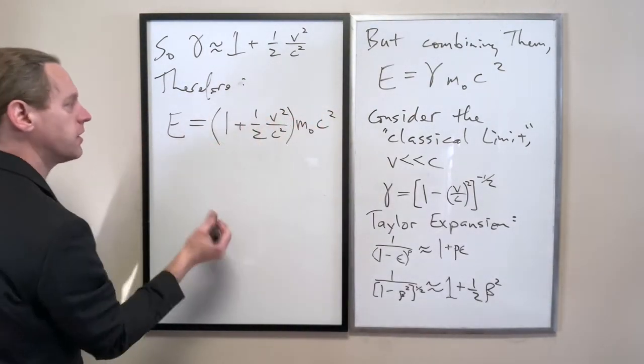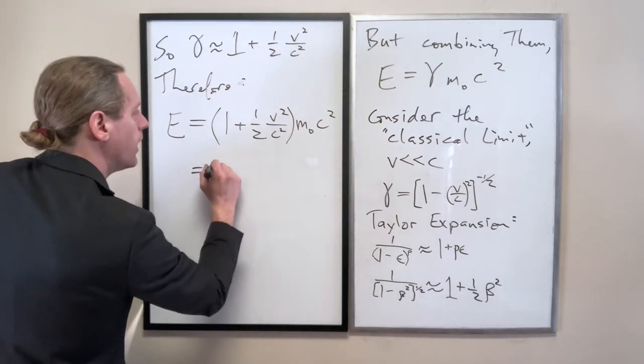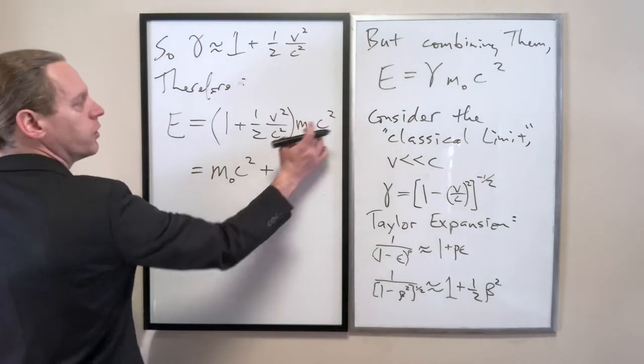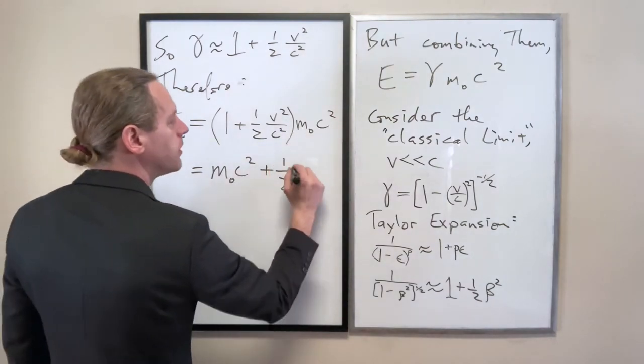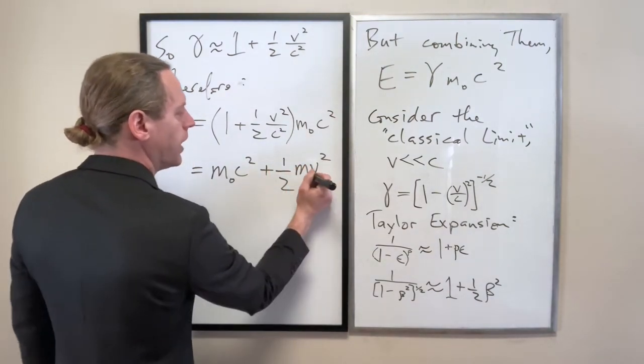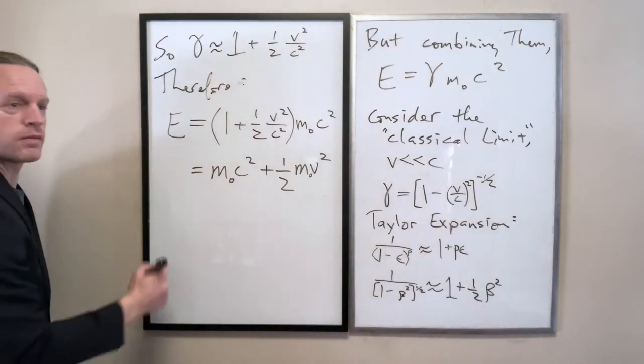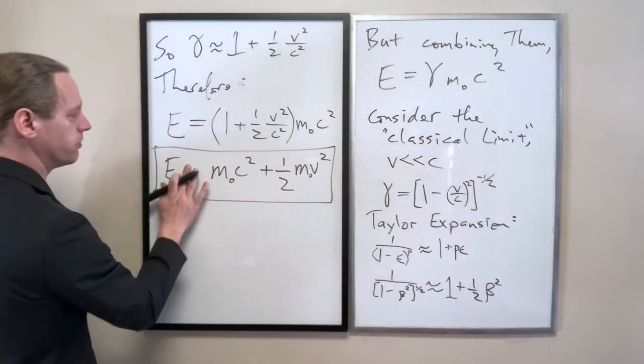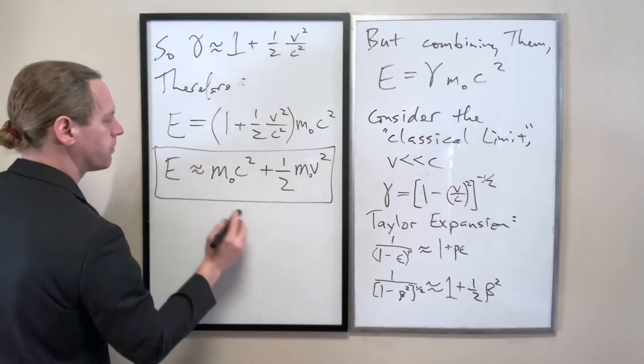So what we're going to do now is use the Taylor expansion here. 1 over 1 minus, and I am going to write it beta squared, to the half power. We're going to Taylor expand that to be 1 plus that power, a half, times beta squared. So gamma we can approximate for very small values as 1 plus a half V squared over C squared. And by the way this should be that for the classical limit.